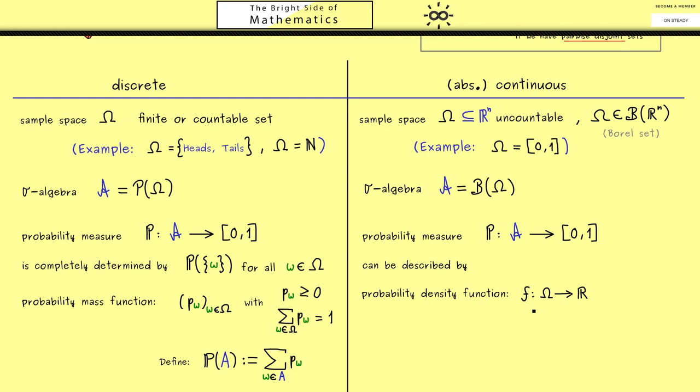This density function we simply call f, and it's defined on the whole sample space omega. Because we want to measure probabilities, we have the same two properties as on the left-hand side. First, at each point we have a non-negative number. Because in this case omega is a subset of R^n, we usually use the letter x, but x is still an element of omega. For the second property, we translate this sum into a continuous case. This means we want the integral of the function f to be equal to 1. It's the integral where we integrate over the whole domain omega. In our simple example, it would be a one-dimensional integral, but in general, we have an n-dimensional integral. You see it's completely similar to the discrete case. Therefore, the probability measure can be defined as P(A) equals the integral over the domain A.